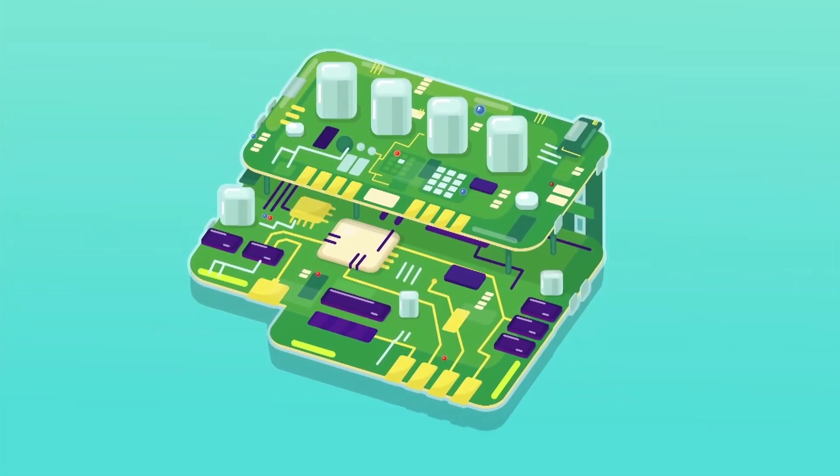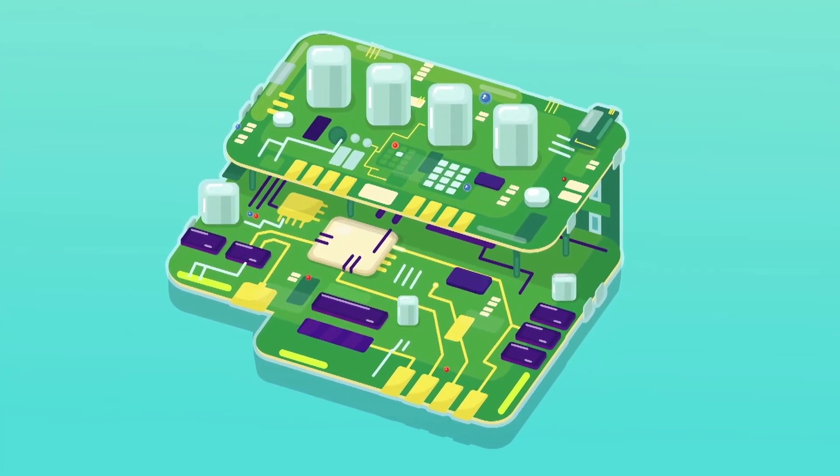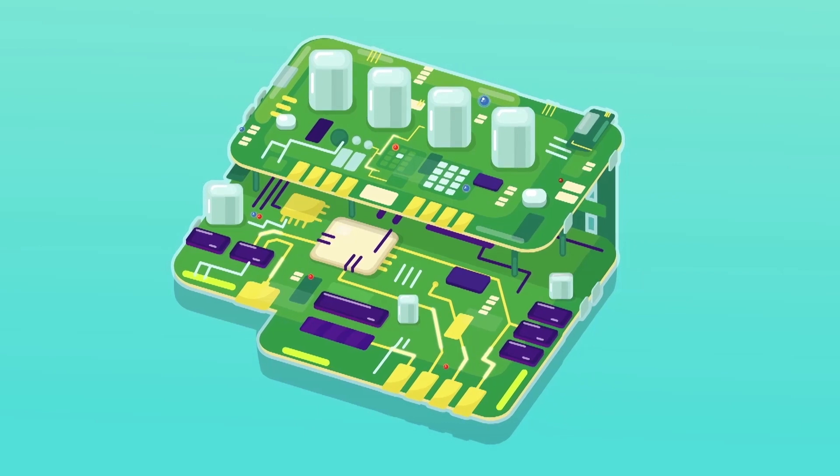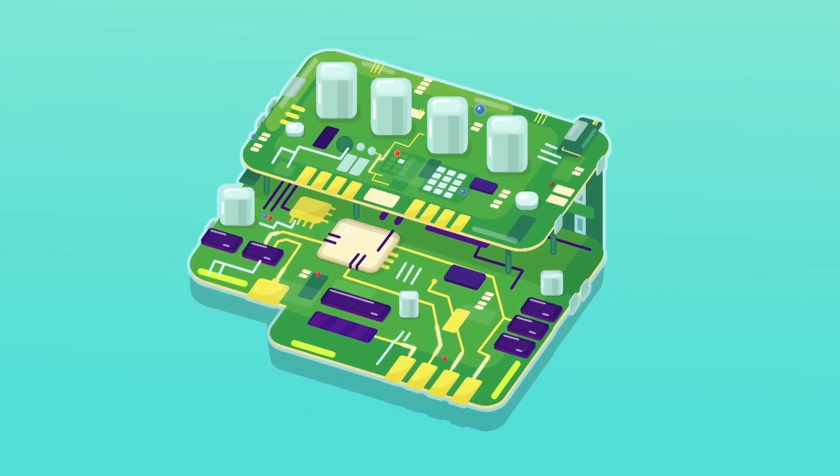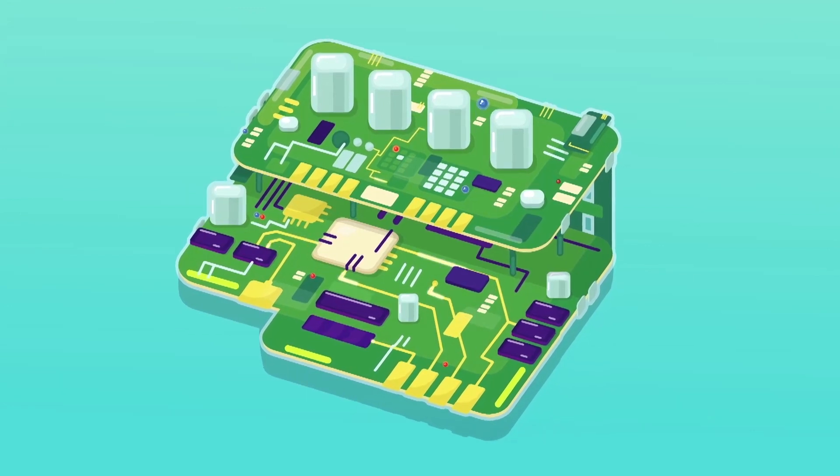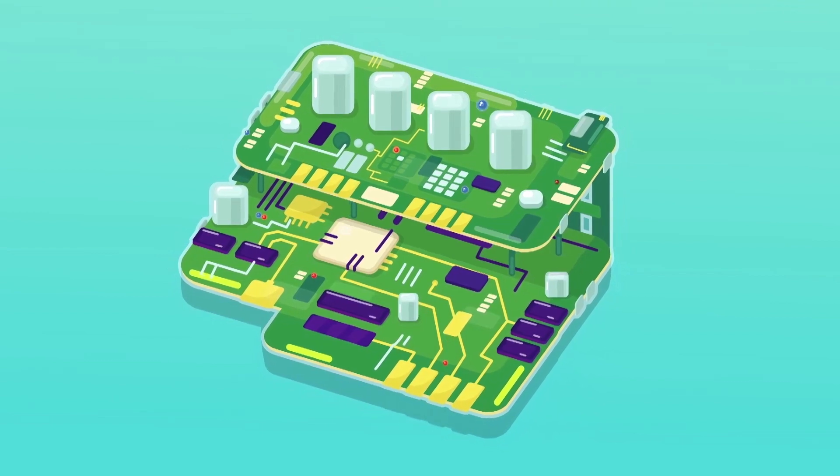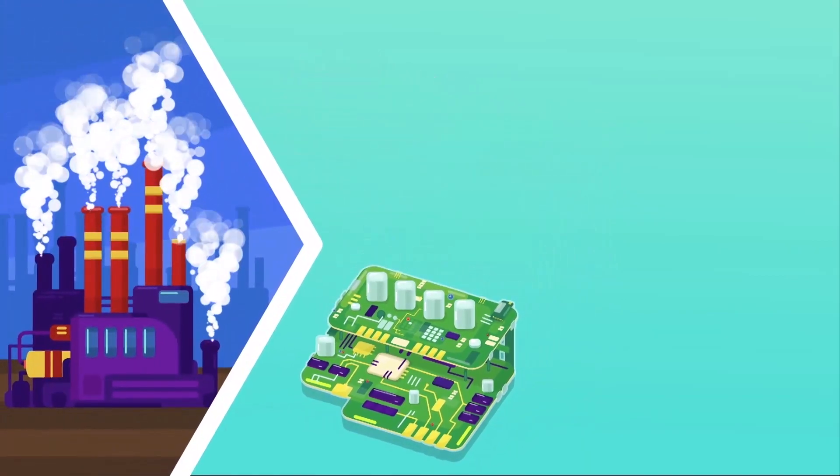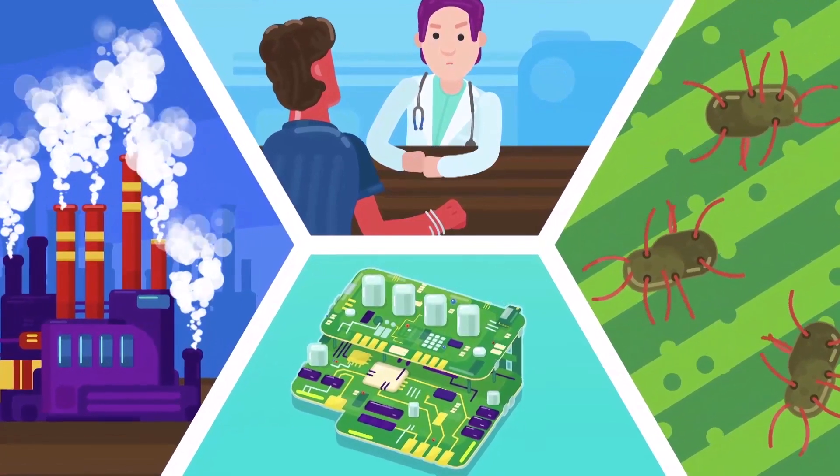Exactly how our olfactory system allows us to perceive and distinguish between a trillion different odorants is a mystery that's still being unraveled. But the parts that they have worked out have been mimicked by engineers in the design of sensors called electronic noses. Electronic nose sensors have applications in monitoring the environment for pollution, diagnosing disease, and detecting microbes in food that could make us sick.